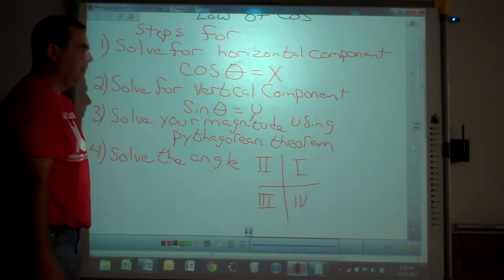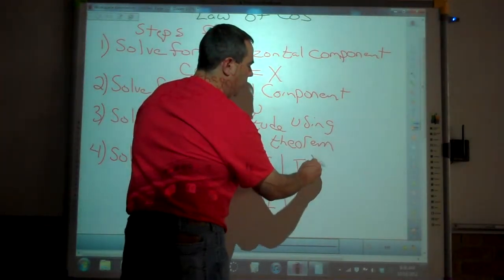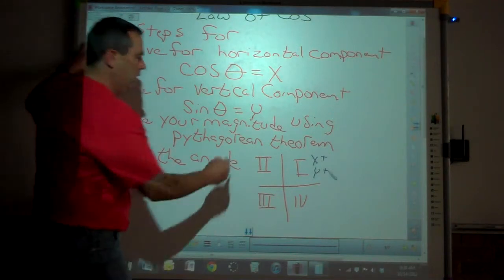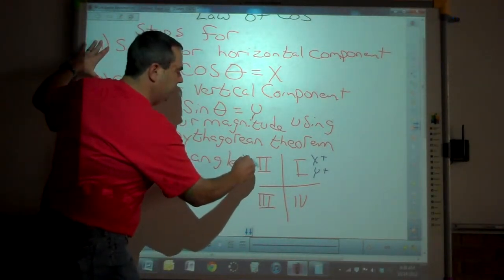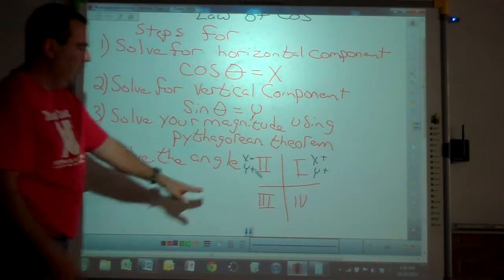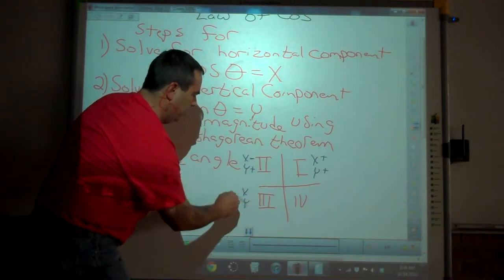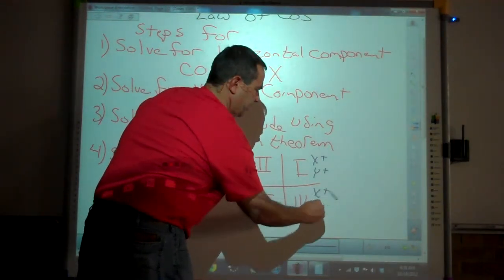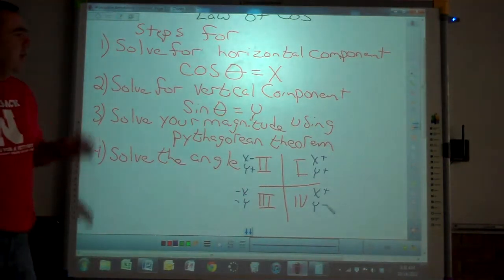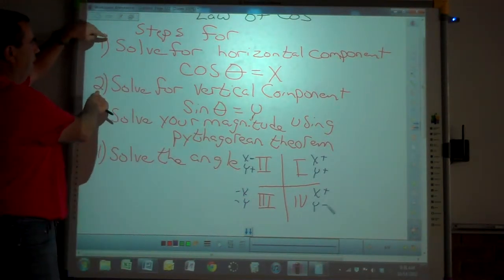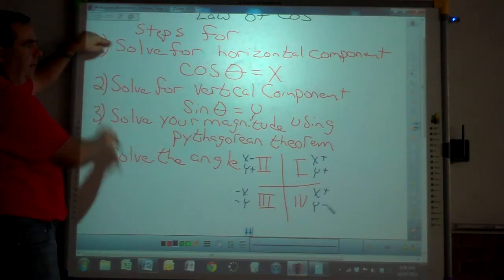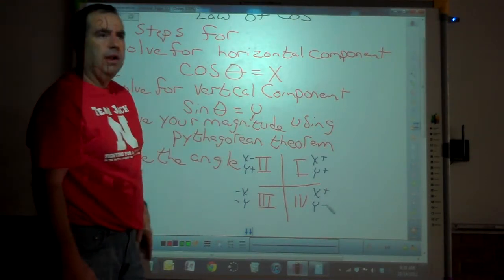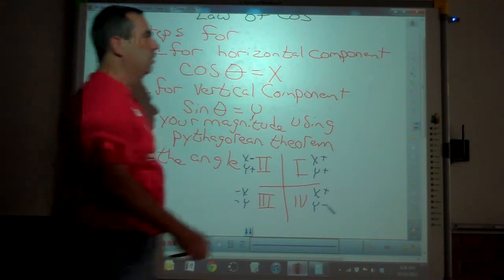Remember: in quadrant one, x and y are both positive. That comes back to steps one and two. Quadrant two, x is negative, y is positive. Quadrant three, x and y are both negative. Quadrant four, x is positive and y is negative. It's very important to check in steps one and two whether your x value is positive or negative, and whether your y value is positive or negative — that tells you what your exact angle has to be.